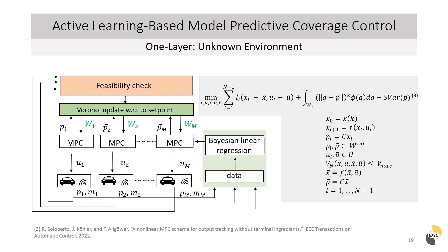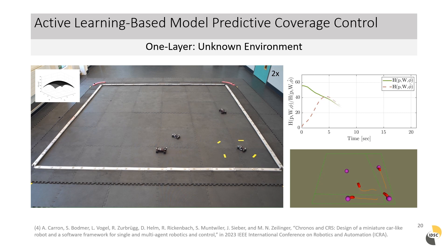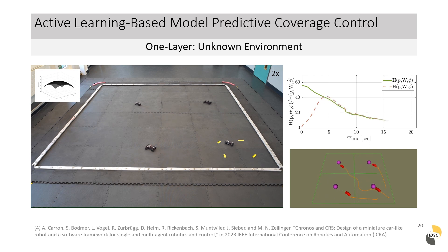Finally, the extension of the one-layer to an initially unknown environment is obtained by including the uncertainty into the MPC cost. As there is no explicit decision between exploration and coverage, for the current setup the one-layer shows a faster cost decrease in an unknown environment than its previously presented two-layer counterpart.